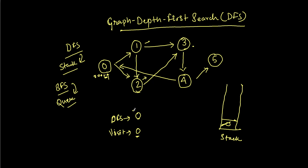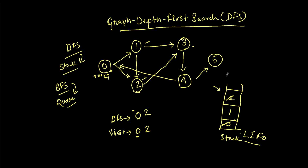We extracted zero, so from zero we can go to one and two. We'll add one and two to the stack. Now we have added all vertices we can traverse from zero. It's time to extract another node from the stack. The stack is last-in-first-out, so the element added last comes out first. We extract two, put two in the DFS output, mark two as visited, and then add all nodes reachable from two. From two we can go to three, so we put three on the stack.